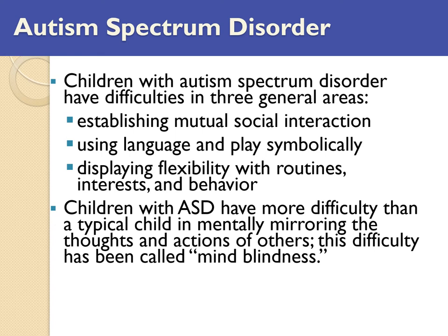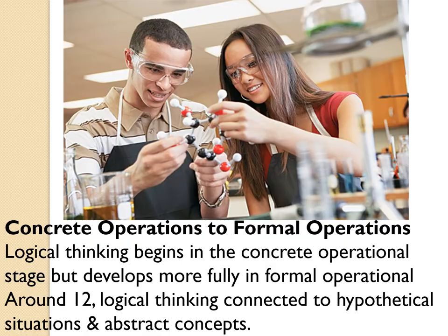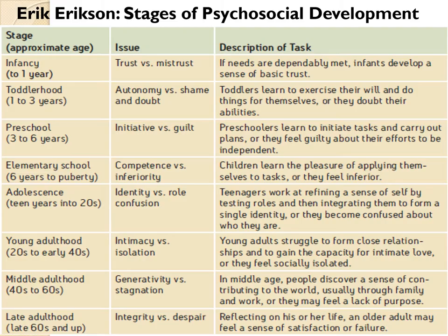People on the autism spectrum also experience 'mind blindness' — mirror neurons don't function as effectively, making it harder to read facial expressions, register others' discomfort, or understand when personal space has been violated.